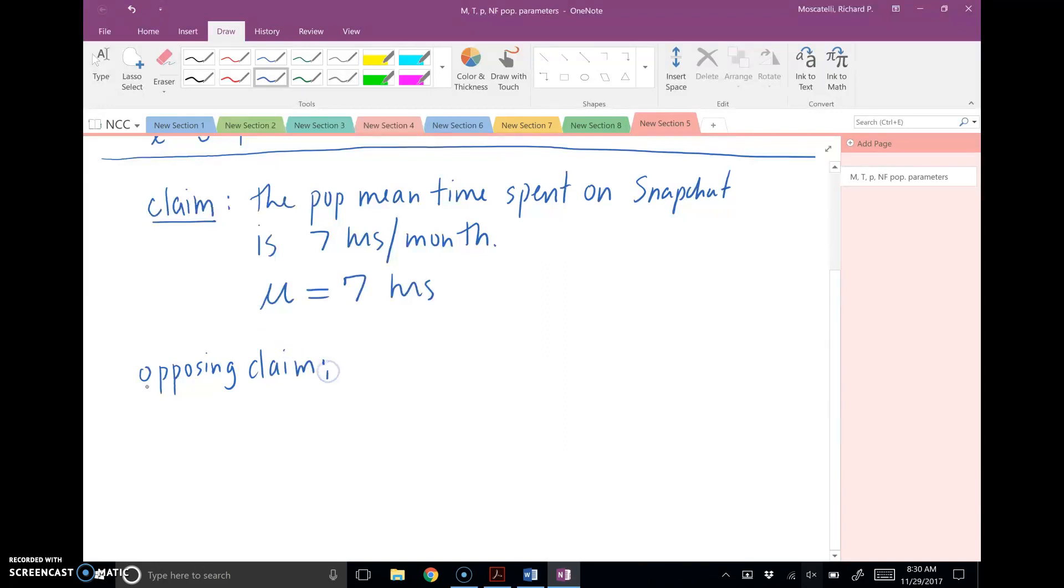So you might oppose this claim. So I'll call this the opposing claim. And I'll write this symbolically, so I don't have to write out all the words. But if you're going to oppose the claim that the mean, the population mean is seven hours, then the opposing claim for that, you might feel that Snapchat is more popular than ever.